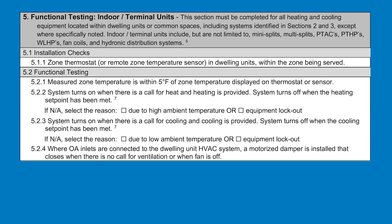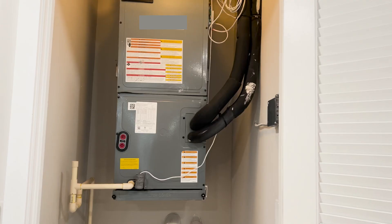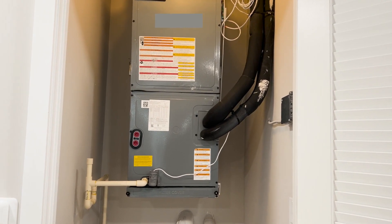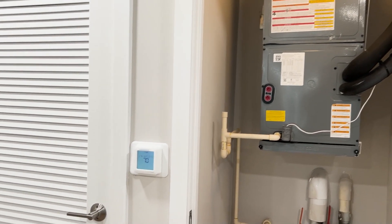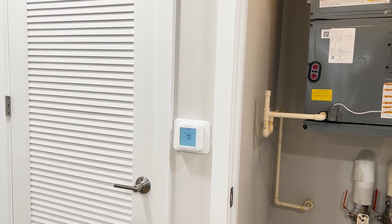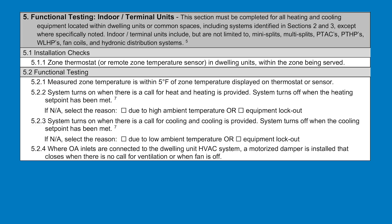Section 5 of the ENERGY STAR Multifamily New Construction Functional Testing Checklist includes two main subsections: 5.1 for installation checks and 5.2 for functional testing. Section 5.1.1 looks for the zone thermostat in the dwelling units. We check that there is a thermostat in the dwelling unit and that the thermostat is in the location that the HVAC unit serves.